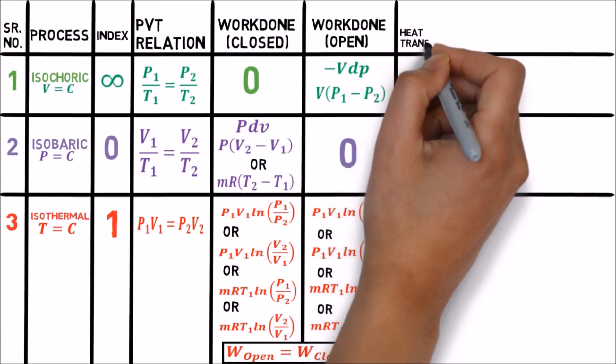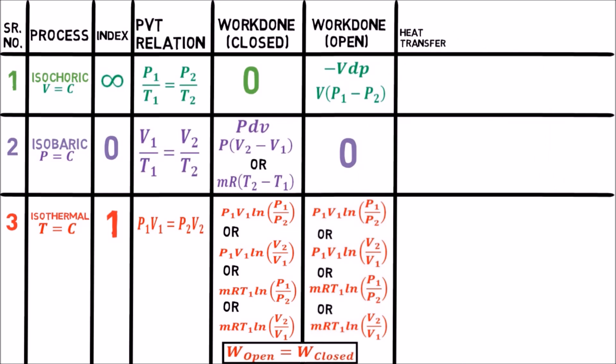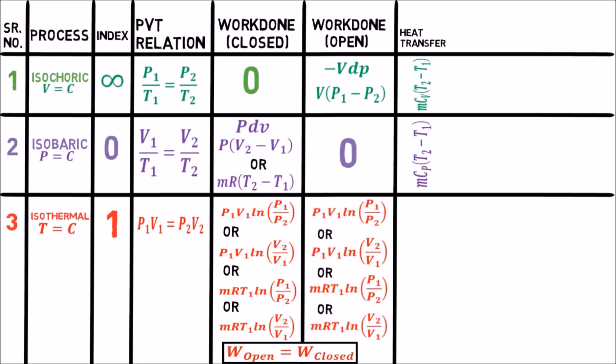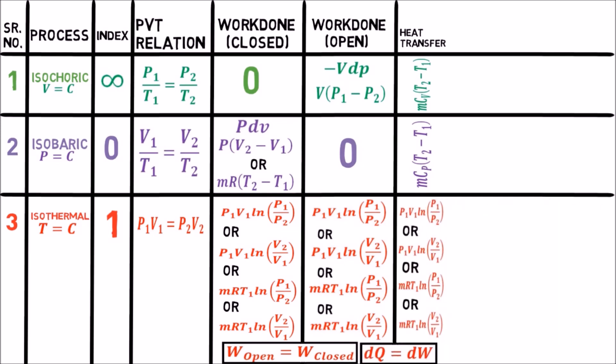Let's see heat transfer during these processes, which is the area under the curve of temperature and entropy of respective processes. In isochoric process, volume is constant, hence formula is mCv(T2 − T1), while in isobaric process the formula is mCp(T2 − T1) because pressure is constant. From the first law equation dQ = dU + dW, in isothermal process internal energy is zero, so heat transfer equals work done — hence the same formulas apply.